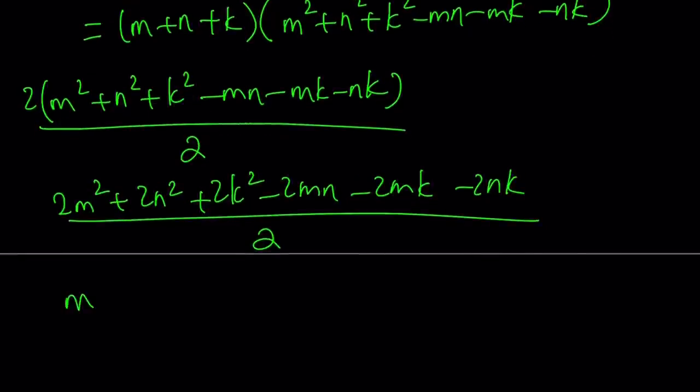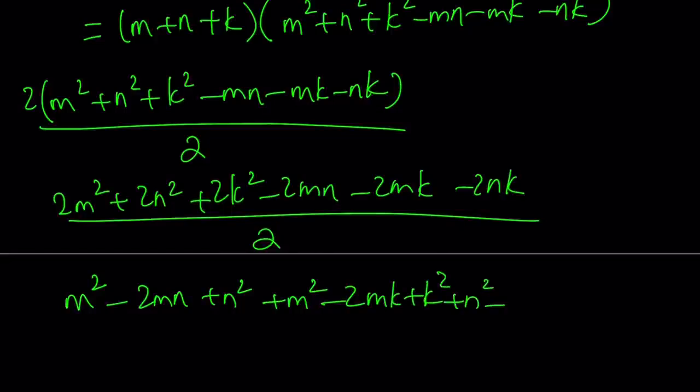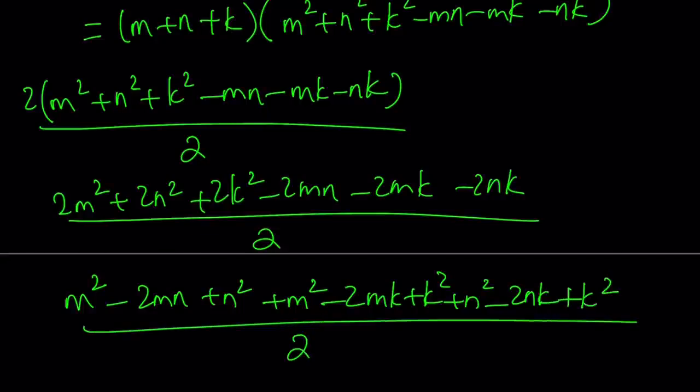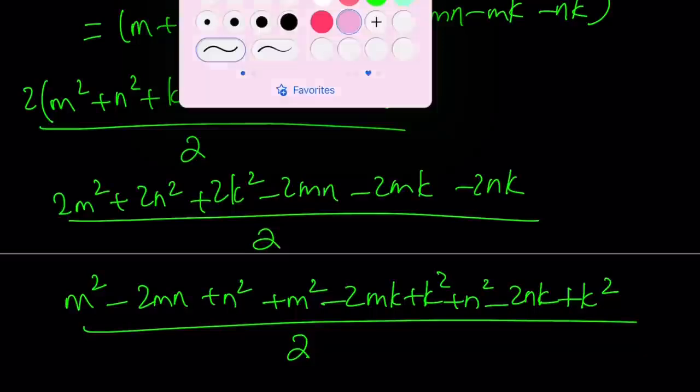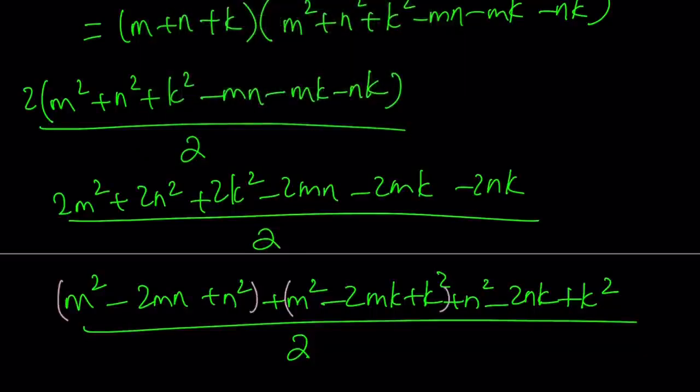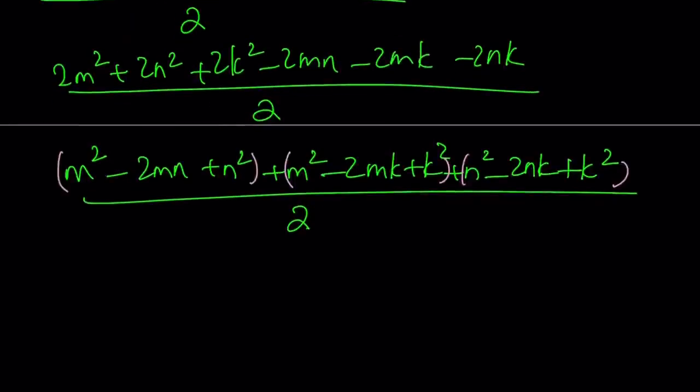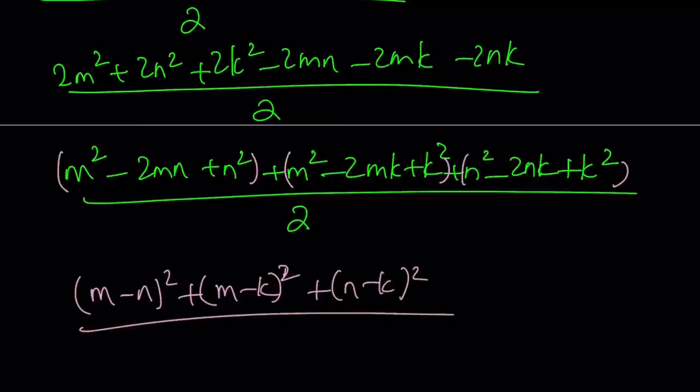Notice that this can be split up into three different expressions: m squared minus 2mn plus n squared, plus m squared minus 2mk plus k squared, plus n squared minus 2nk plus k squared, and all of that is divided by 2. And here, notice that these are perfect squares. We can write this as m minus n quantity squared, m minus k quantity squared, and n minus k quantity squared, all divided by 2.